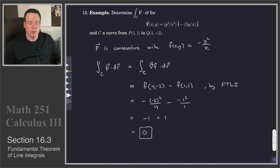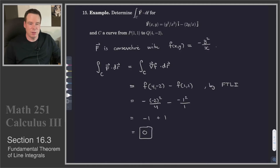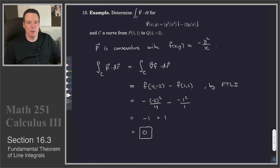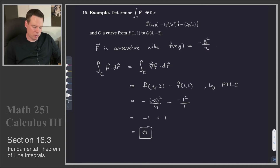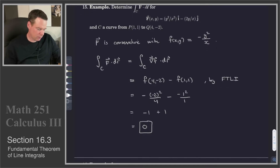Note here: we computed the integral by using the fundamental theorem of line integrals, finding a potential function, and evaluating at its endpoints. We didn't do any parametrization of the curve because in this case the integral didn't depend on the parametrization. All it depended on was the initial and terminal points, and having a potential function — which we did.